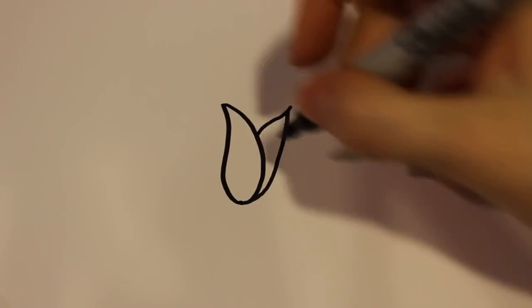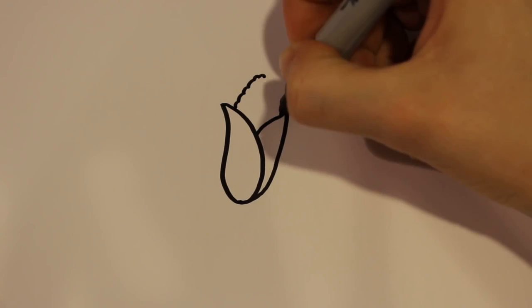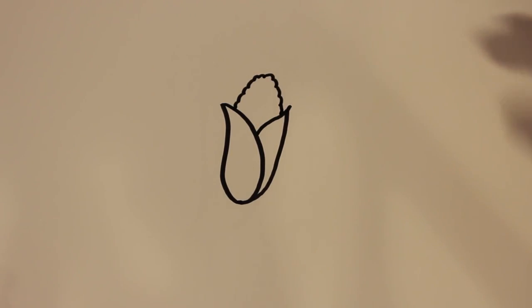And then for the corn part I'm just going to add a wiggly shape that would look like corn from each side. Just like that.